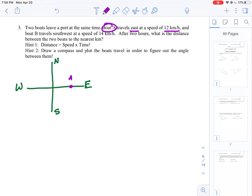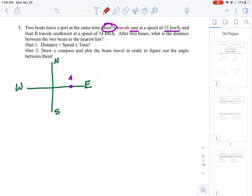Boat B, which I will put in a different color, travels southwest at a speed of 14 kilometers per hour. Southwest is in between west and south, so we'll put a dot right here and I'll mark that point B.